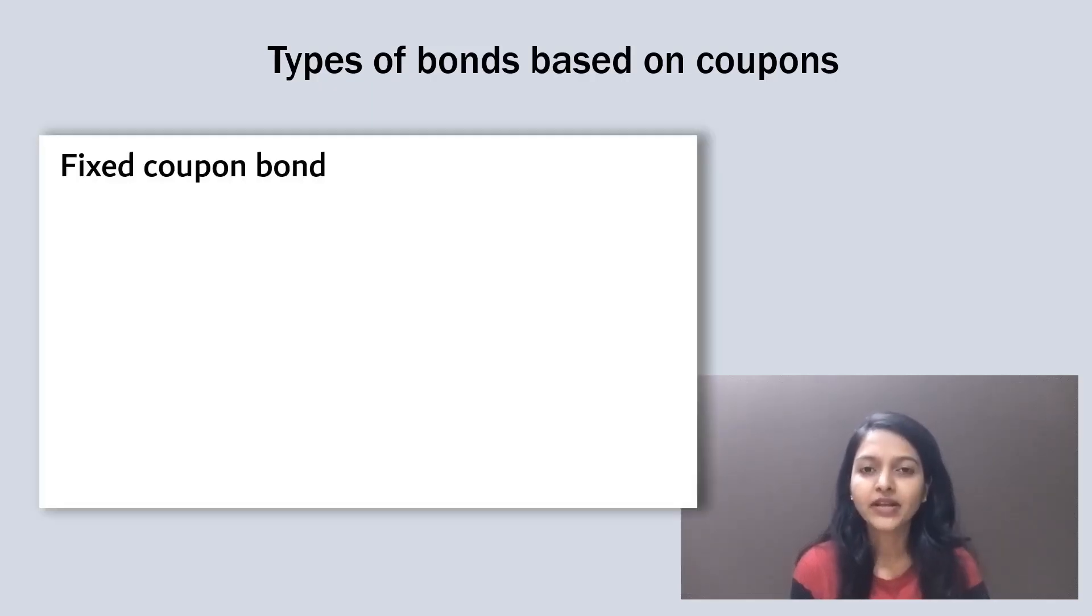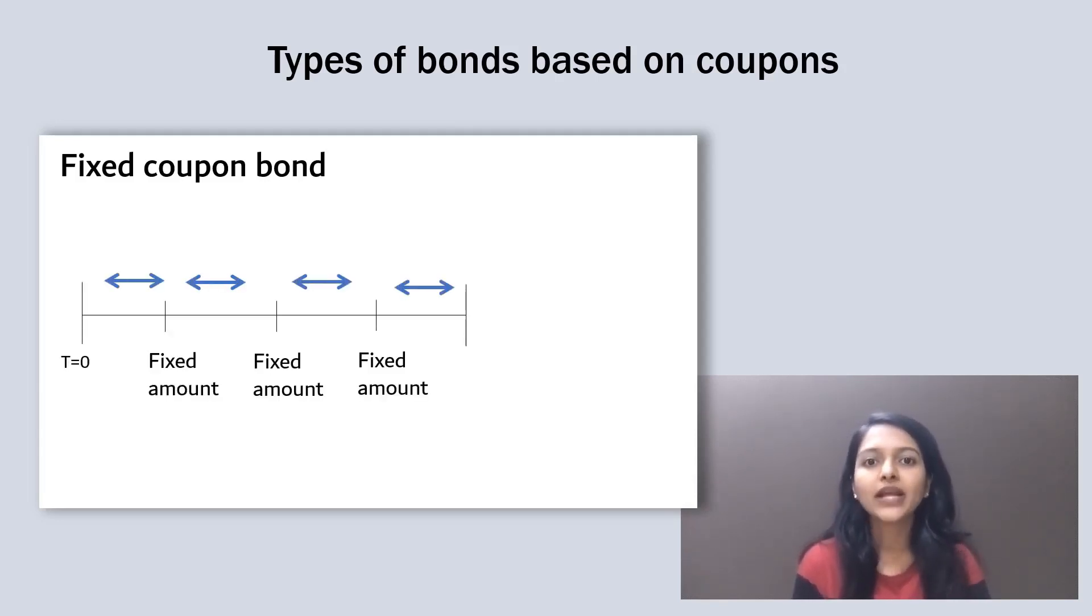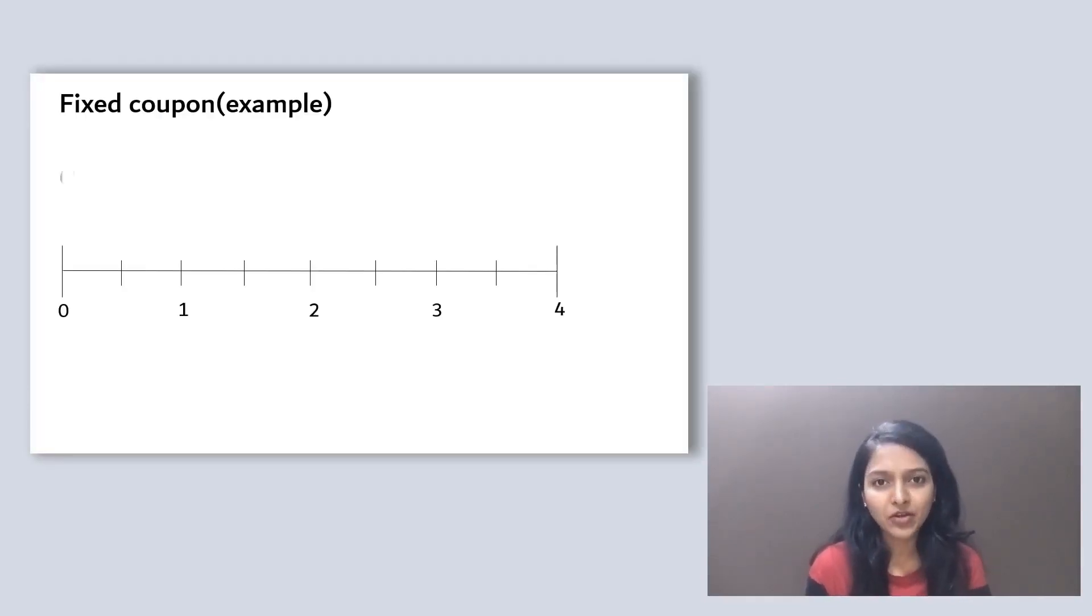First one is fixed coupon. This is a very simple one. In this, they pay a fixed interest amount at specified time intervals over the entire duration of the bond. Now the coupon frequency can be annual, semi-annual, or even quarterly. For example, a company issues a 4-year semi-annual bond at 6%, which means it will pay a fixed 6% every 6 months for all 4 years.